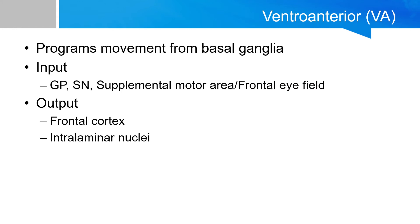The ventral anterior nucleus functions to program movement from the basal ganglia. It receives efferents from the basal ganglia and the premotor cortex, and its efferents go to the frontal cortex and premotor cortex for initiation and planning of movements.